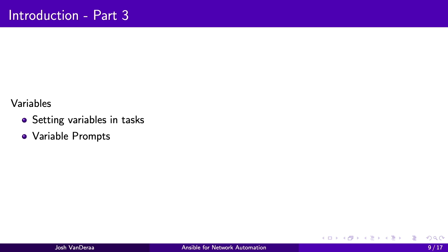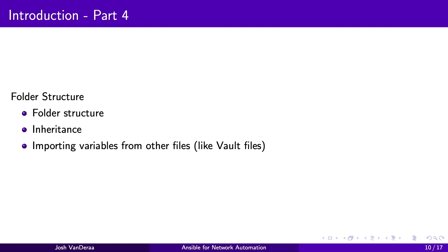In part three, we're going to get into variables — how do we set them in tasks, how do we prompt for variables, and just general getting started with variables. Part four, we're going to take variables a little bit further with the folder structure. There's a default defined standard for Ansible's folder structure, and there are some important pieces related to inheritance — how does a variable defined at level A versus B versus C play out — and then importing variables from other files.